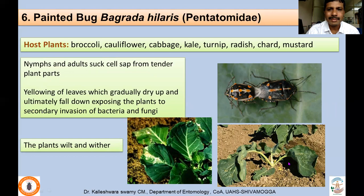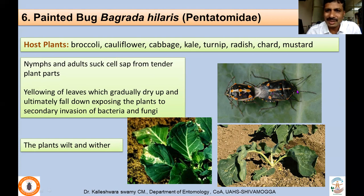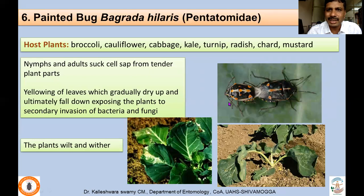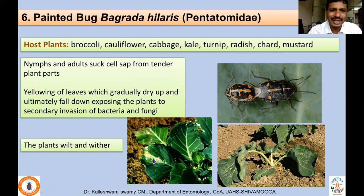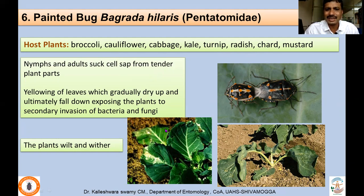Another widely distributed pest is the Painted Bug, Bagrada hilaris, which earned its name because of its coloration — black with orange and whitish patches running in the middle of the abdomen with a number of spots. It belongs to family Pentatomidae and attacks most cole crops. It sucks sap, resulting in whitish patches which later leads to wilting and withering. Secondary invasion of bacteria and fungi occurs because of the sucking activity, and the whole plant expresses withering and wilting symptoms.